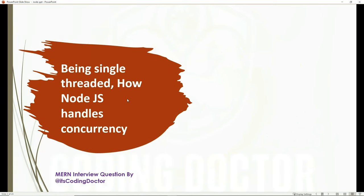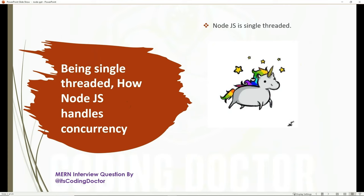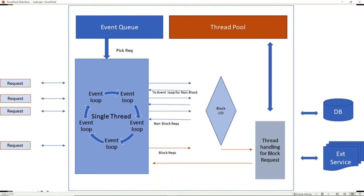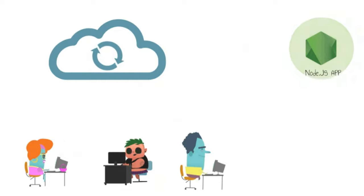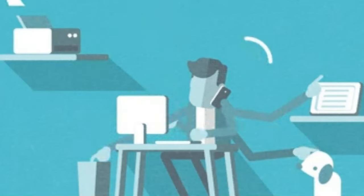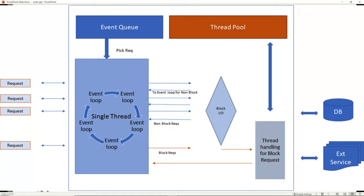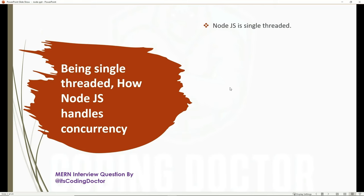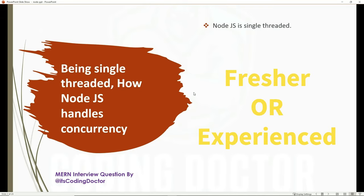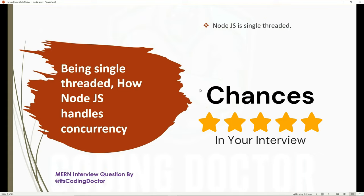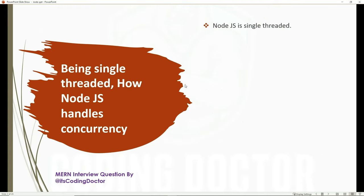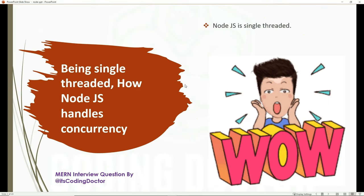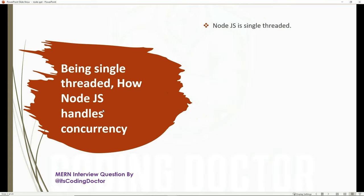The first question is: being single-threaded, how does Node.js handle concurrency? Node.js is single-threaded, which means it uses the single-threaded event loop model architecture to handle multiple concurrent clients. It can handle more and more concurrent client requests with ease, and it eliminates the need of creating more threads because of the event loop. There are 90% chances this question would be asked, maybe as 'how does the event loop work' or 'how does Node.js work.'